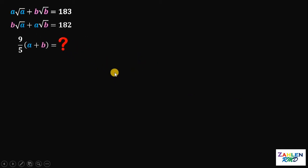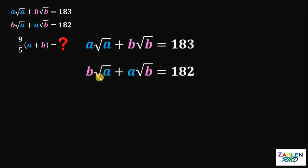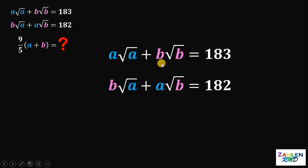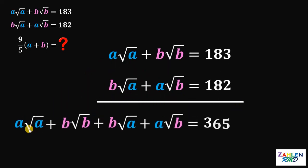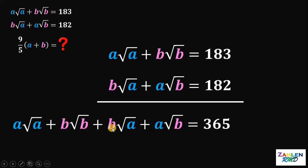Our goal is to find the value of 9 over 5 multiplied by the sum of A and B. Given these two equations, how are we going to answer this? Notice that we have the variable A outside the radical sign in both equations. What will happen if we add those two equations? Adding them gives us A times square root of A plus B times square root of B plus B times square root of A plus A times square root of B, and 183 plus 182 gives us 365.